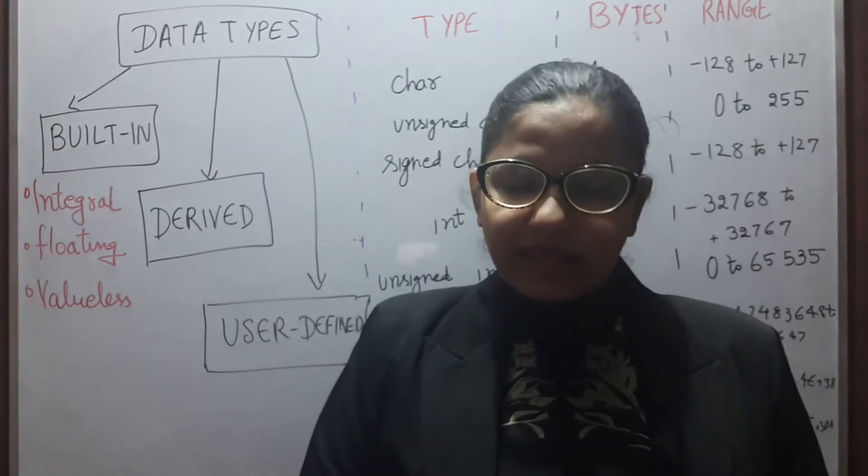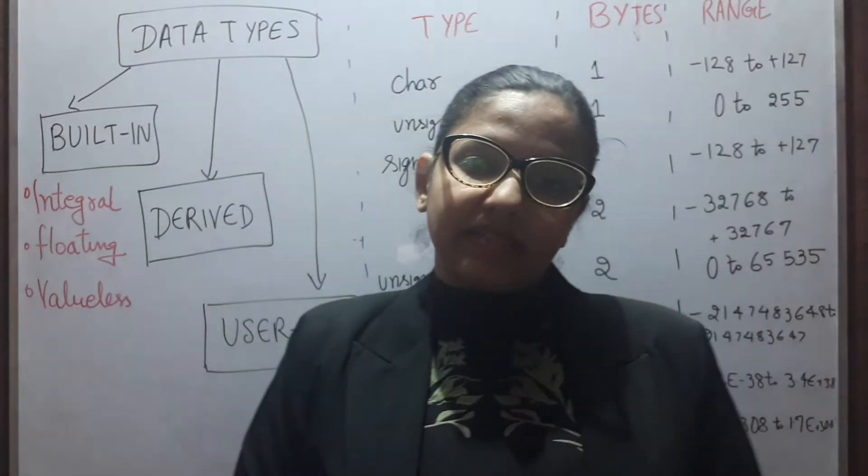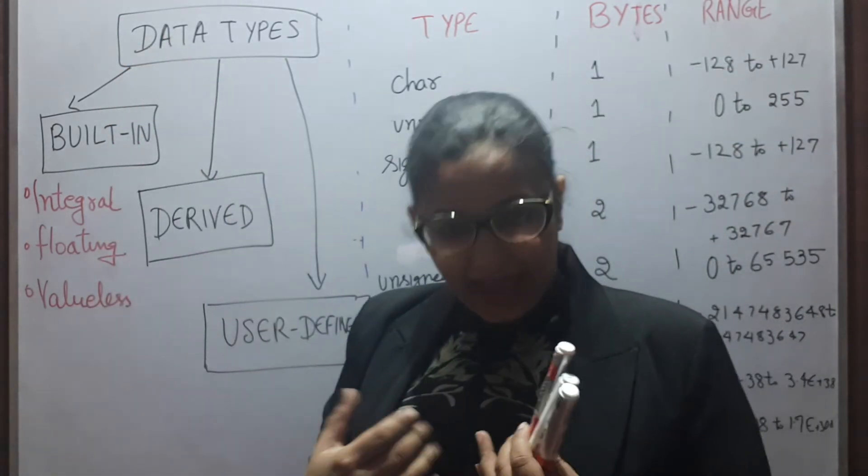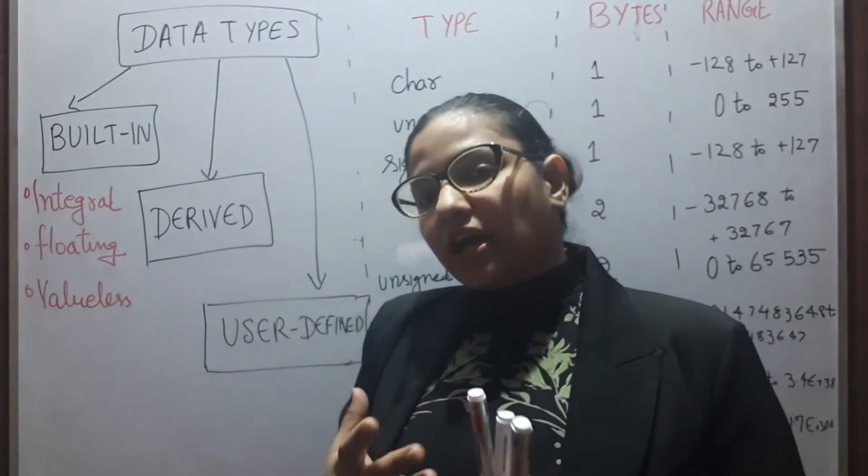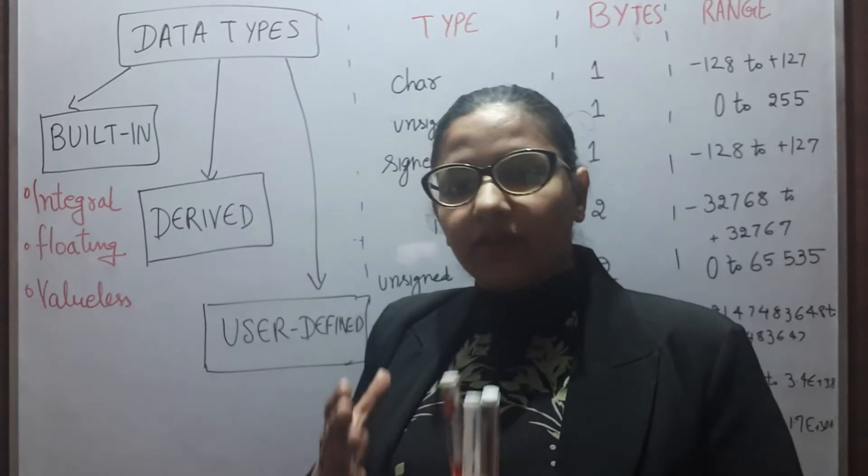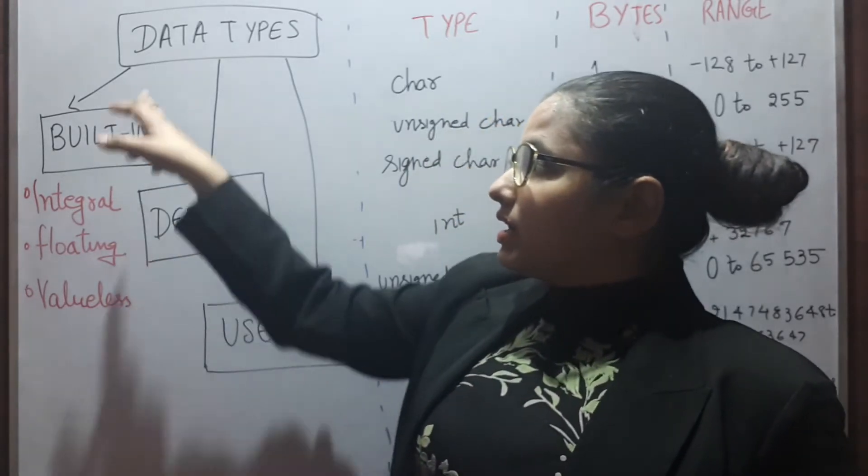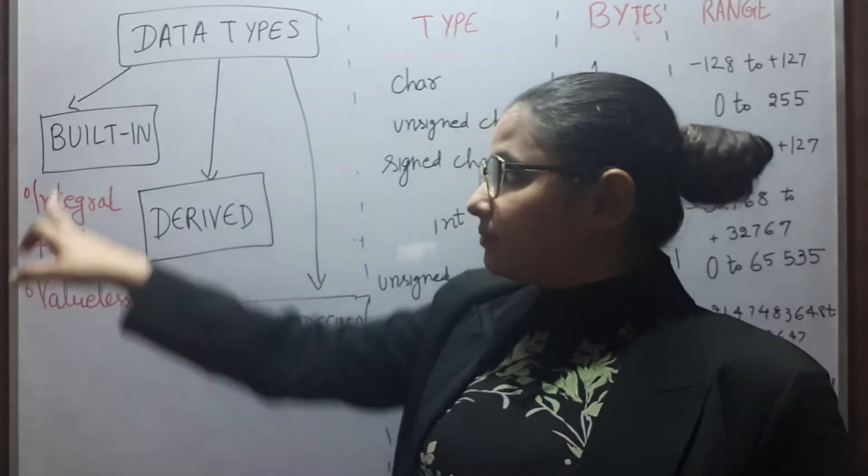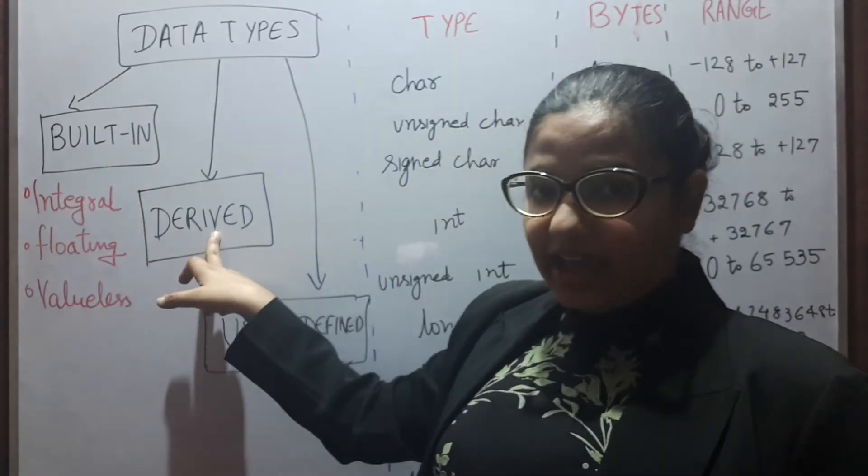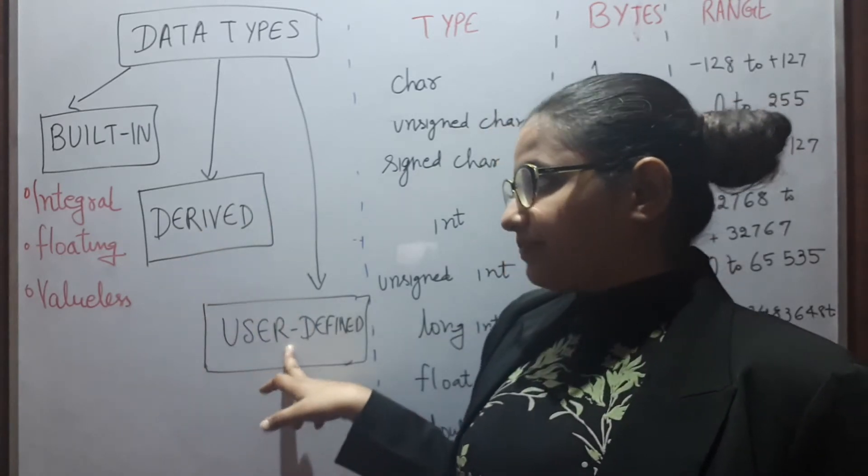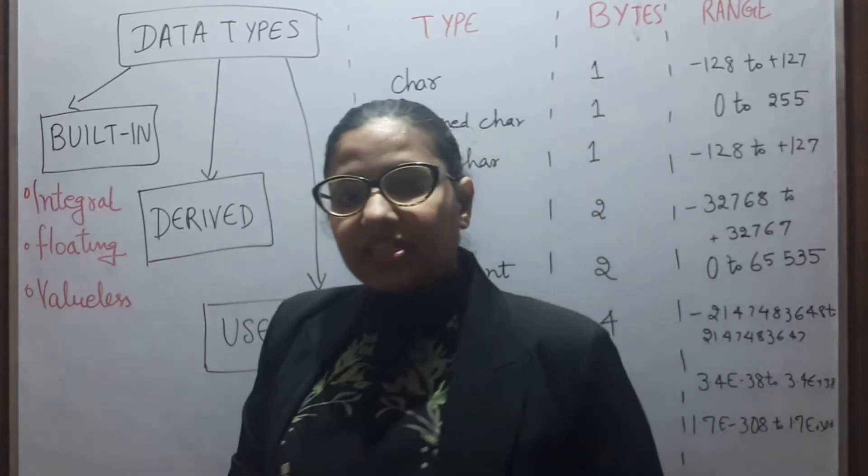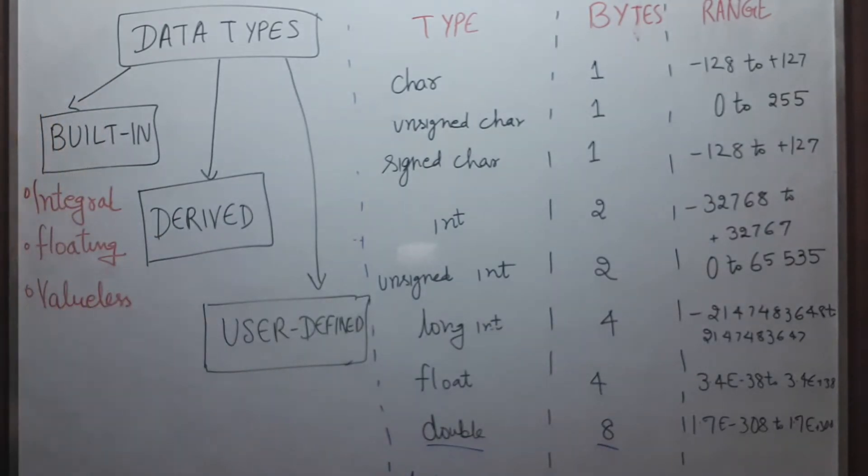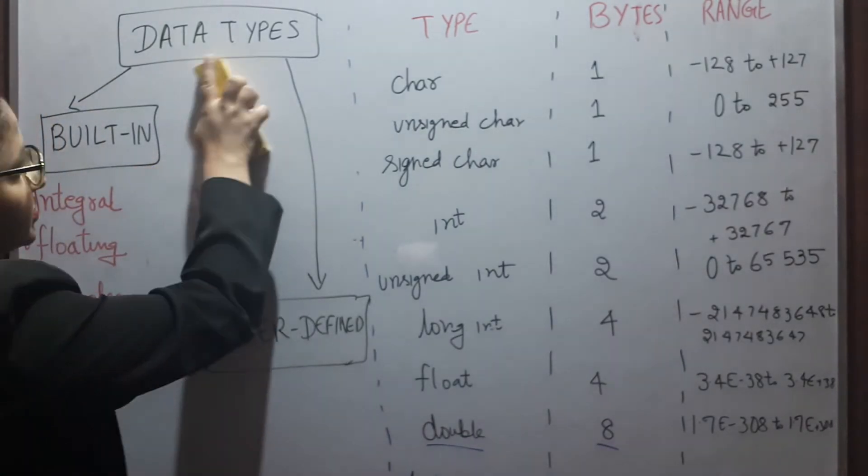Good morning guys. Let's see data types in C++. In C++, as we know, data types are used to declare any variables. Here we are having three different categories of data types: built-in, derived, and user-defined. In this video, I will explain built-in. In next lectures or videos, we will explain derived and user-defined.